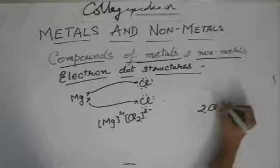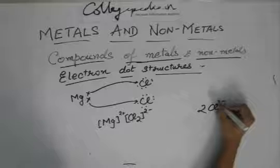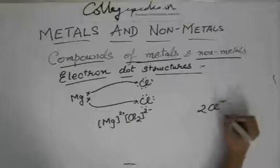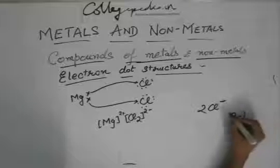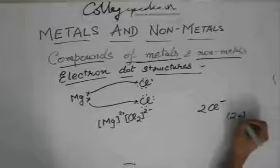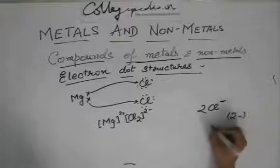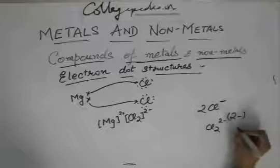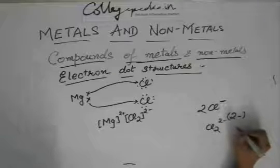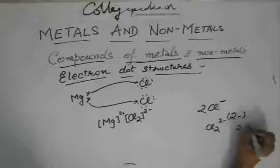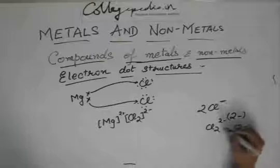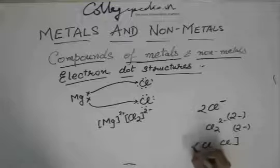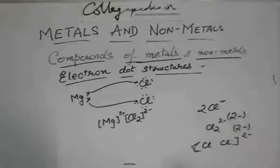To clarify: if you write Cl₂²⁻, the charge is not 2×2 = −4. It is just −2, because it means there are two chlorine atoms and the total charge of those two chlorine atoms together is two minus — each chlorine carries a −1 charge.